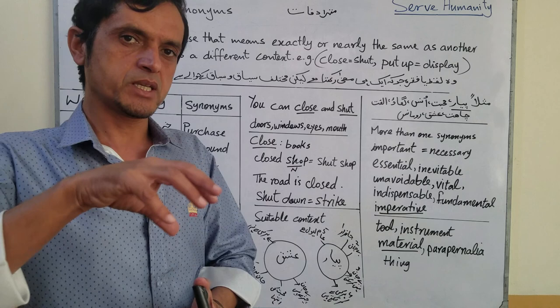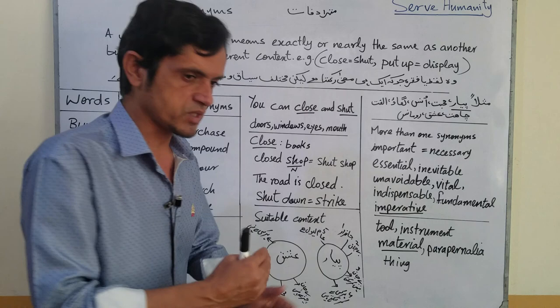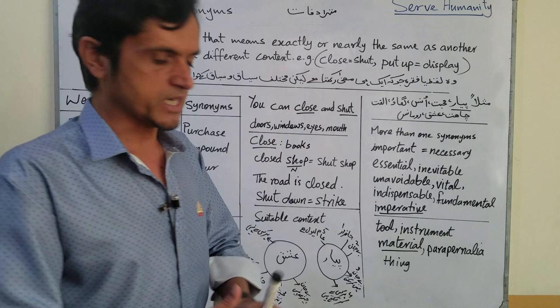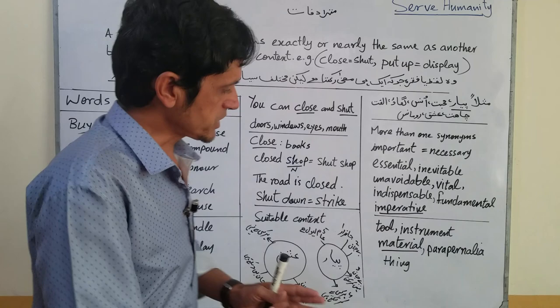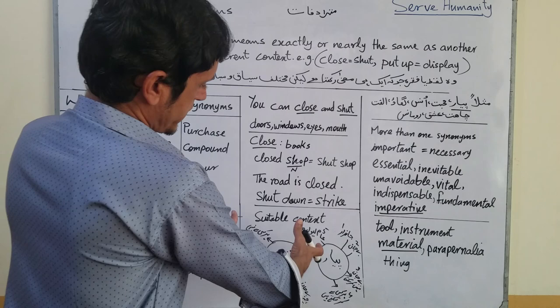Isi tarah jo alfaaz hain, un mein yeh khasusiyaat hain aur un ki buniyaad par yeh aik doosre se mukhtalif hote hain. Words is tarah bante hain jis tarah ke hum aik building banate hain — mukhtalif material, bricks, cement, steel. Isi tarah alfaaz mein bhi mukhtalif elements milte hain, aur phir us lafz ka sahi istemaal un elements ki buniyaad par kiya jaata hai.